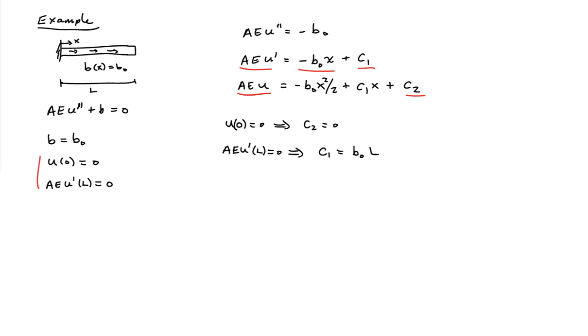So if I apply the first boundary condition, u(0) = 0, that's going to tell me immediately that c₂ has to equal 0.